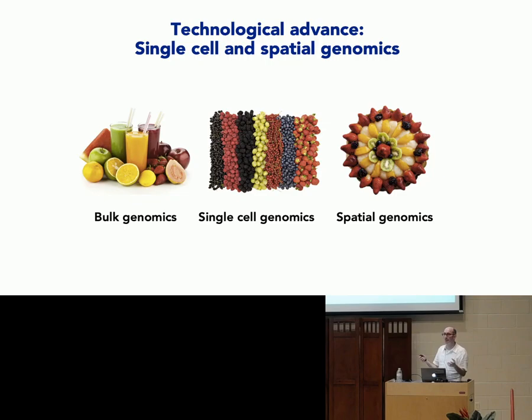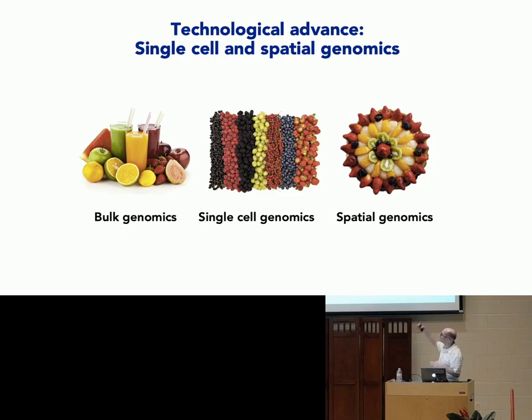What we used to have was kind of like a smoothie — take all the fruit and blend it up. Now what we can do with single cell genomics is measure all the fruit individually. Imagine you had a smoothie and you wanted to know what fruit went into it — that would be pretty hard, especially if there are 20,000 fruits. With single cell genomics we can just measure that right out of the sample.